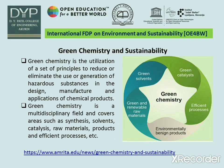Now we will discuss about green chemistry as a sustainable chemistry. Green chemistry is generally the utilization of a set of 12 principles to reduce or eliminate the use or generation of hazardous substances in the design, manufacture, and application of chemical products. Green chemistry is a multidisciplinary field covering areas such as synthesis, solvents, catalysis, raw materials, products, and efficient processes.